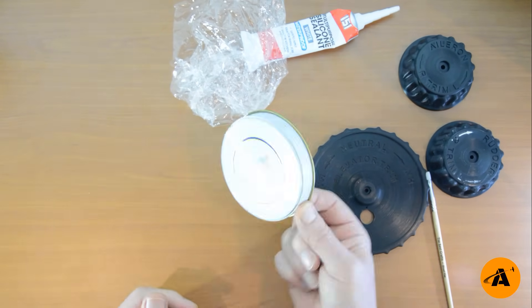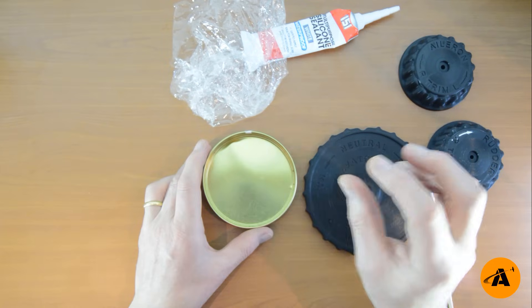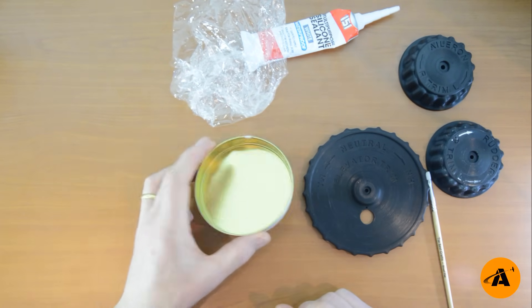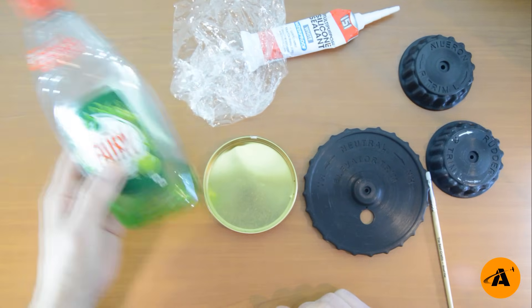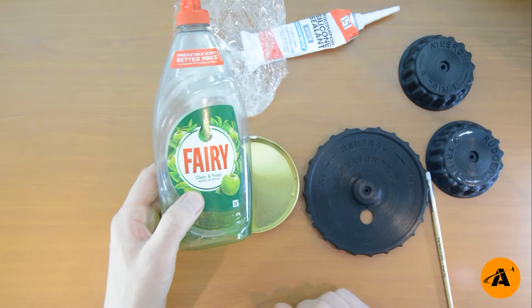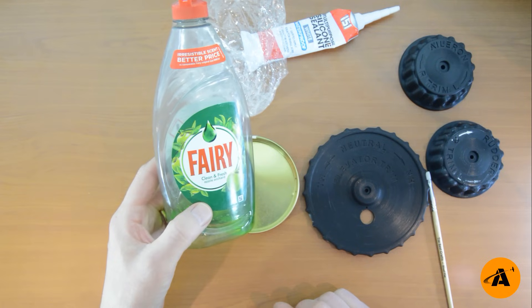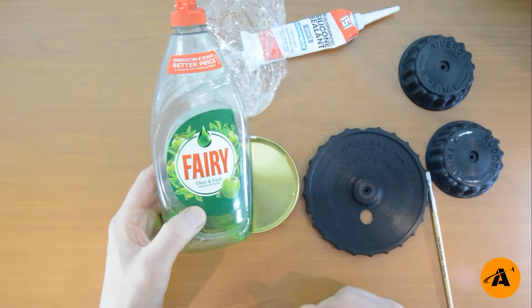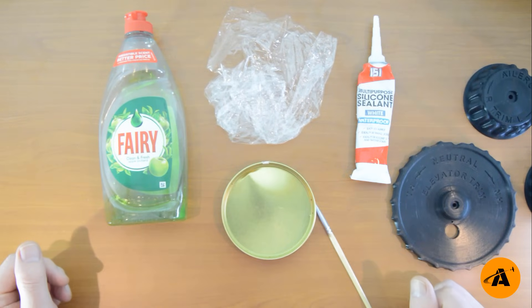You'll also need some cling film. I'll explain later what that's for. And a lid, just some sort of tin lid. We're going to pour some detergent into that. And by detergent, I mean this. Fairy liquid, washing up liquid, whatever you've got to hand. In the UK, everybody has fairy liquid. So that's what we need.